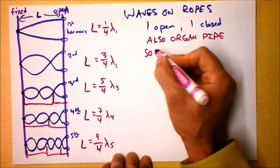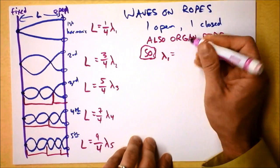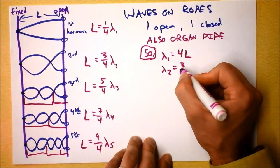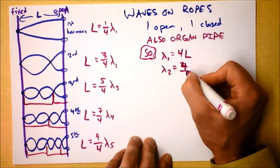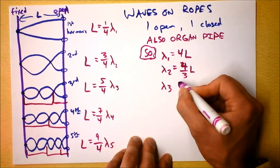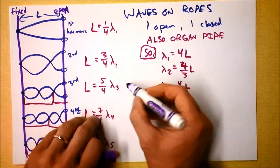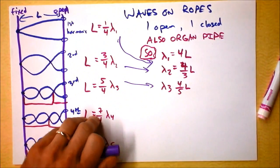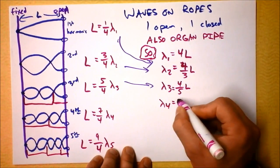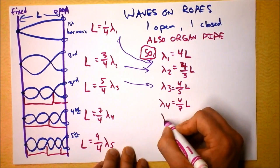So then we can do the same thing as we did last time. We can say that lambda one is four times L and lambda two is four thirds times L and lambda three is four fifths L. See how I'm getting these? They're coming from these equations right here. Just doing some algebra. And then lambda four must be four sevenths L. And they're getting smaller. The wavelength is getting smaller. Of course, I'm fitting more of them in the same length.